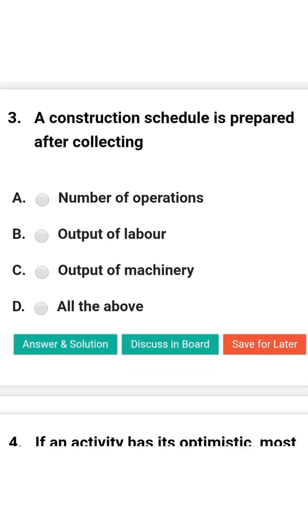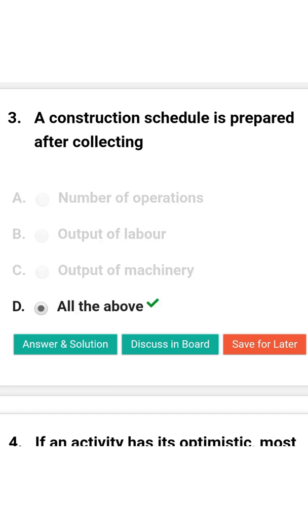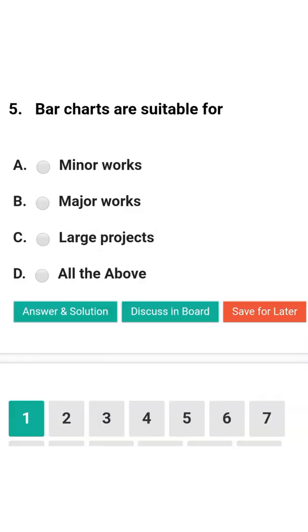Next question: A construction schedule is prepared after collecting — option A: number of operations; option B: output of labor; option C: output of machinery; option D: all of the above. The correct answer is option D: all of the above.